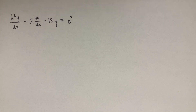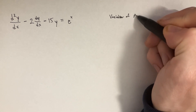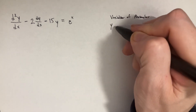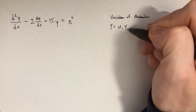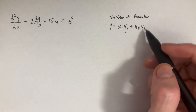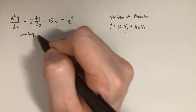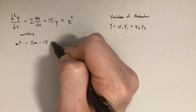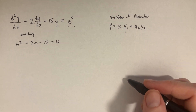Let's see if this equation is possible to solve using the variation of parameters technique. The idea is that we're looking to get a general solution y as a function of u1*y1 plus u2*y2. In order to find y1 and y2, we have to solve the auxiliary homogeneous equation, which is m² - 2m - 15 = 0. We'll deal with the e^x situation a little bit later.